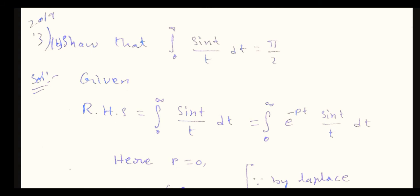I want to show that the integral from 0 to infinity of sin t divided by t dt is equal to pi by 2. That's what I want to prove.